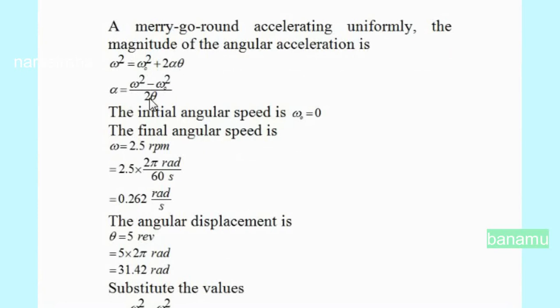The initial angular speed is omega naught equals 0, because it starts from rest. The final angular speed is omega equals 2.5 revolutions per minute, which needs to be converted into radians per second.